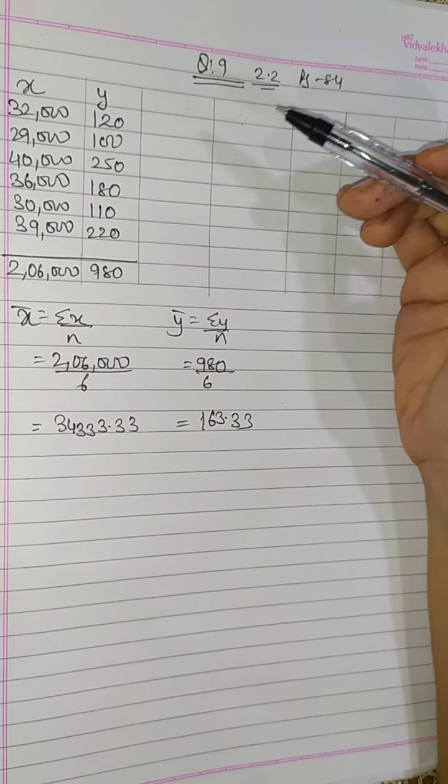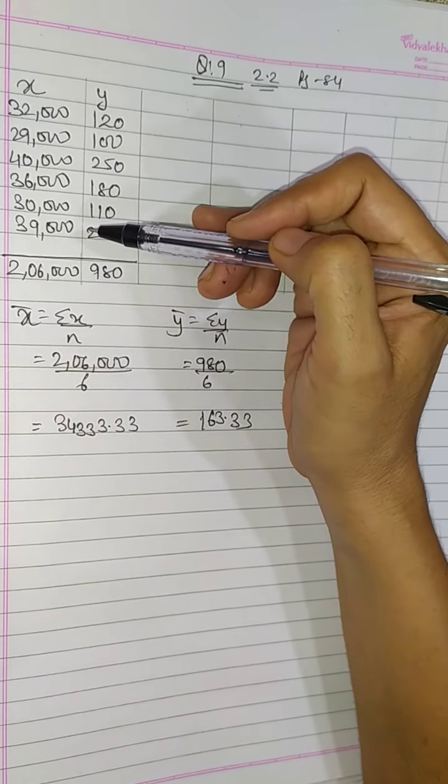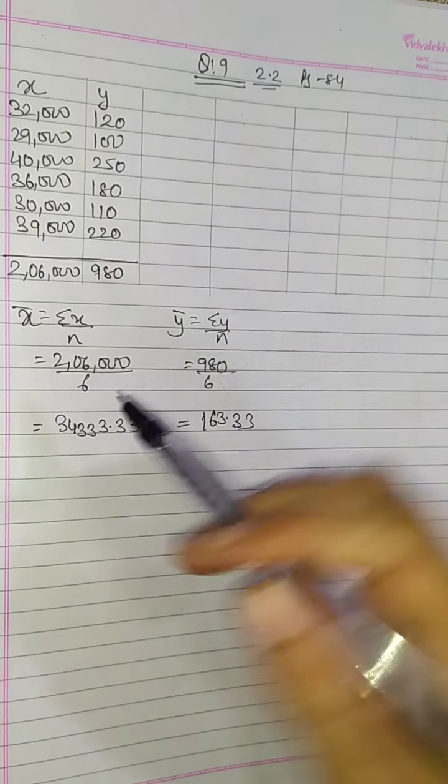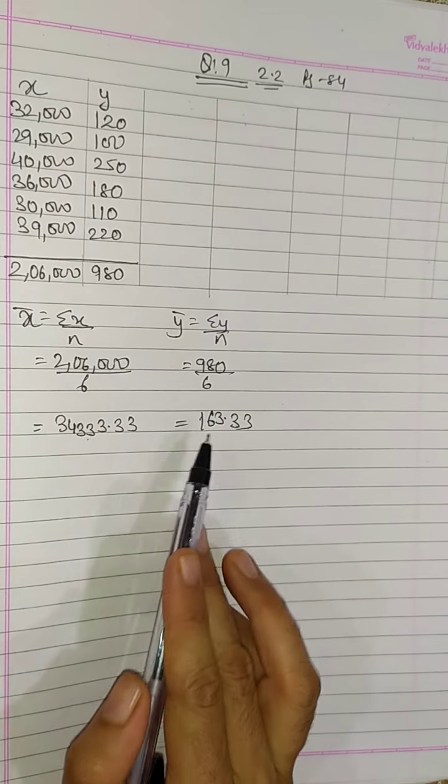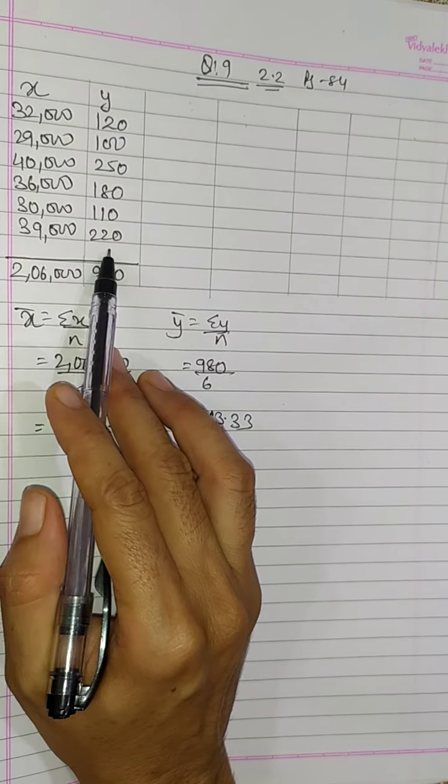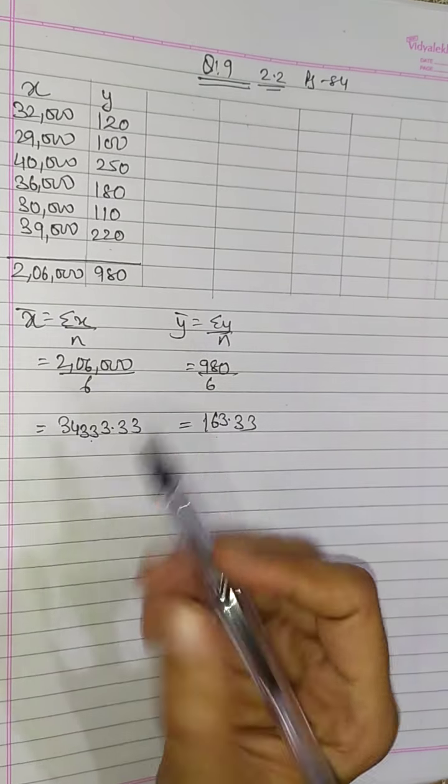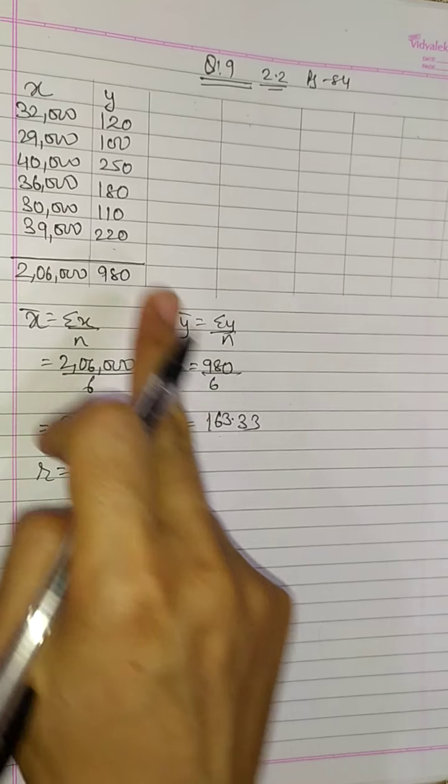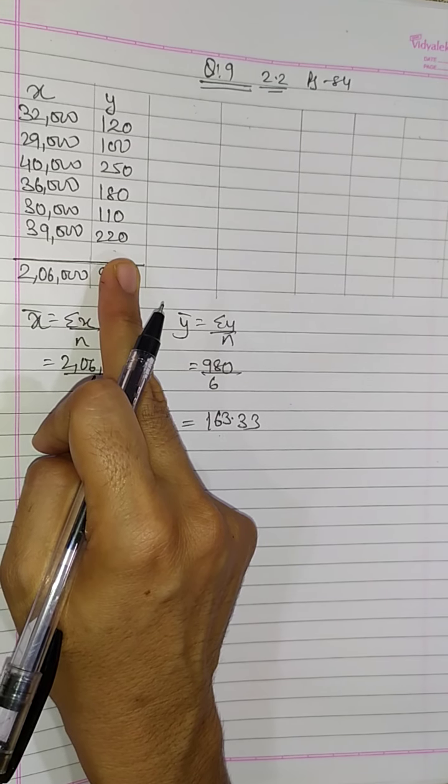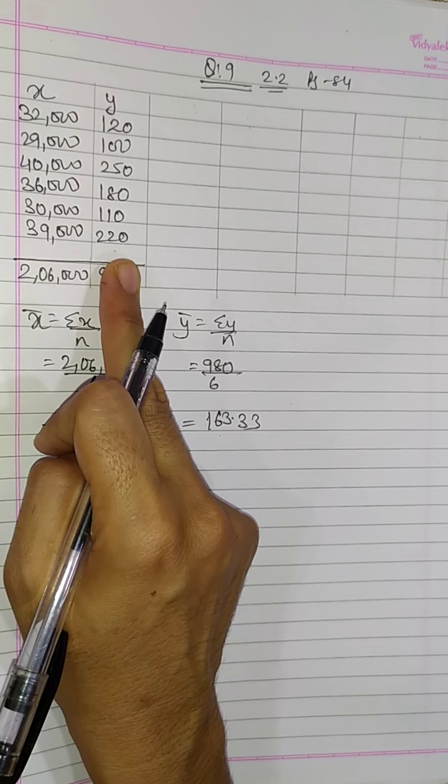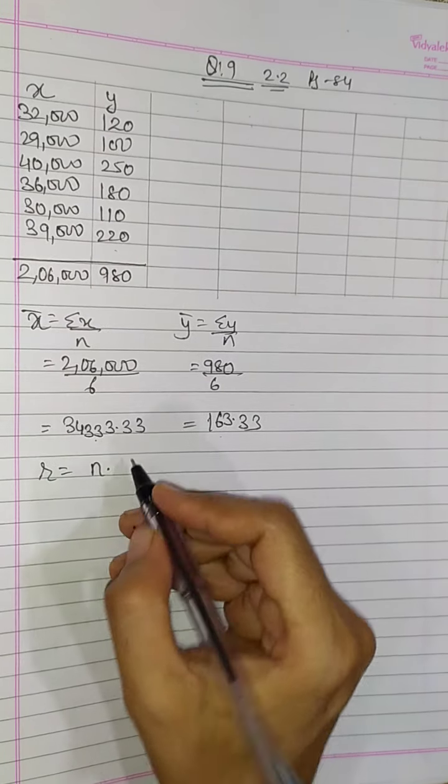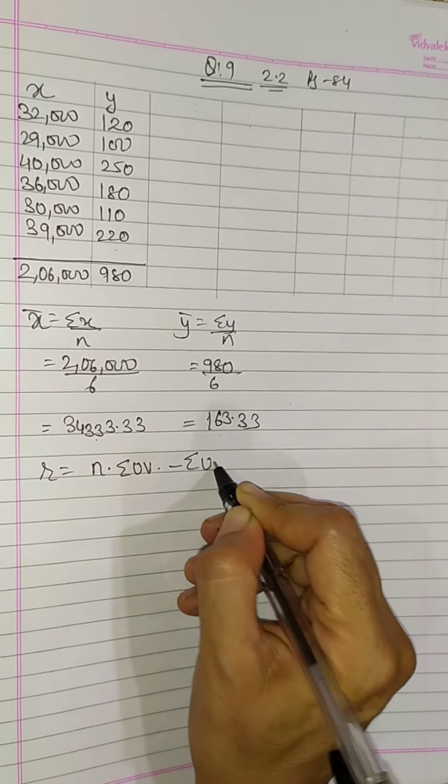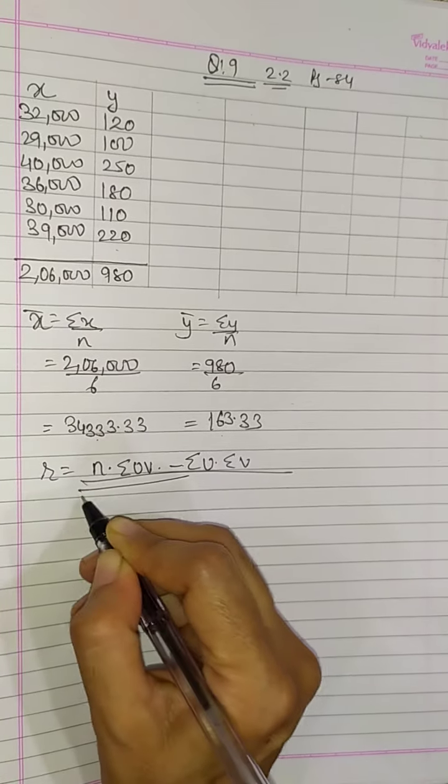Exercise 2.2 question number 9 students. I have copied the question, you have to calculate correlation coefficient. I have also calculated x bar and y bar as you can see. When the means are in points and observations are very large, then you have to use the shortcut formula of uv.